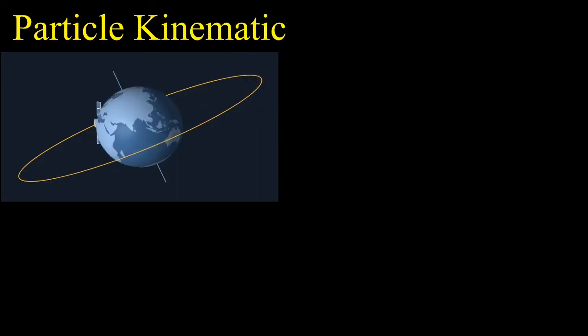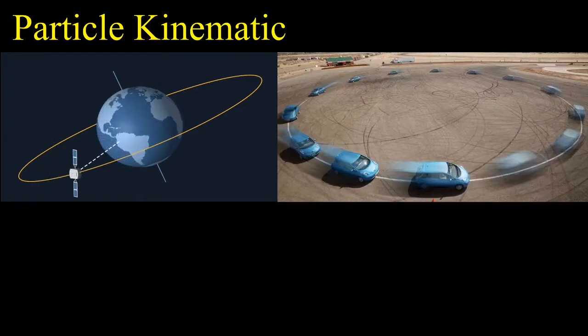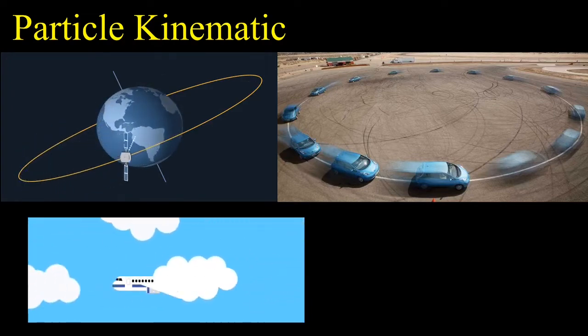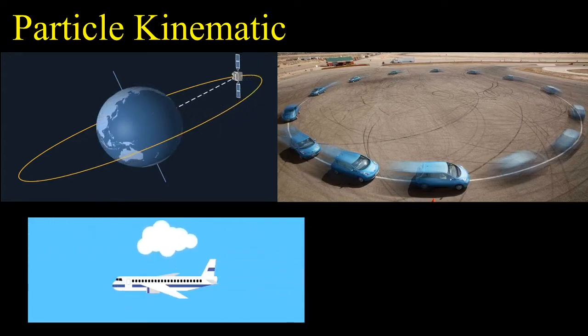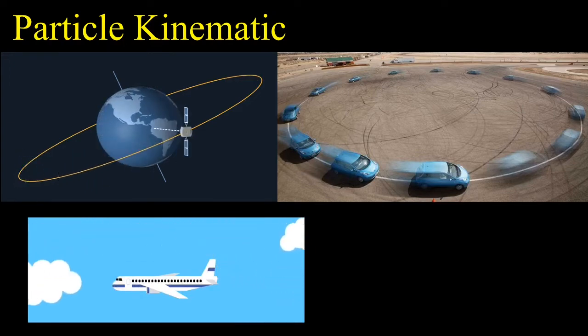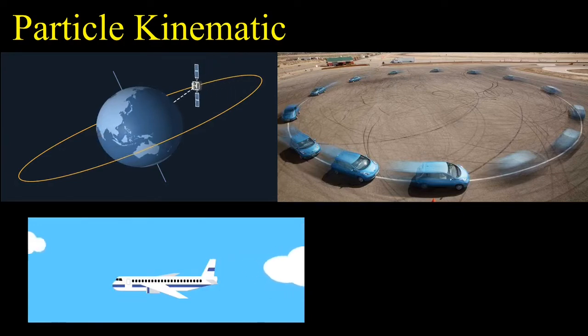Let's move on to particle kinematics. In the real world, there is nothing like a particle — every object has three dimensions. However, if the physical dimension of the object is very small compared to the radius of curvature of its path, or if rotation is irrelevant or absent, then every point on the object has the same position, velocity, and acceleration. We track the motion of the center of mass point, and in such cases a three-dimensional object can be modeled as a particle.